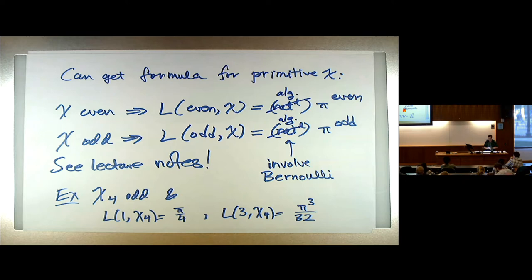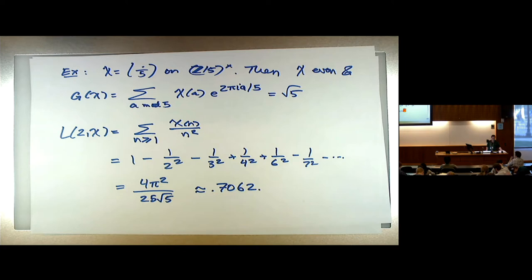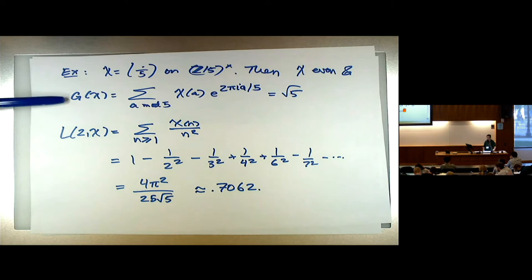Rational numbers are algebraic numbers, but let me give you an example where the multiplying factor is not simply a rational number, but at least algebraic. So if we took the Legendre symbol for modulus 5, that's a character mod 5. It's primitive — a non-trivial character mod a prime is automatically primitive. It's an even character, because minus 1 is a square. The character at minus 1 is 1. And the Gauss sum of that character is the square root of 5.